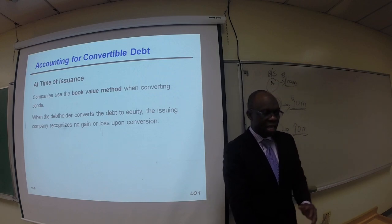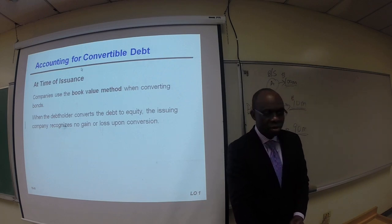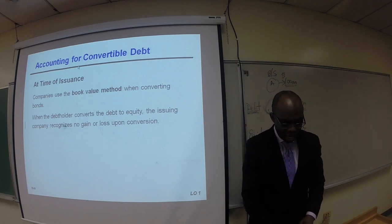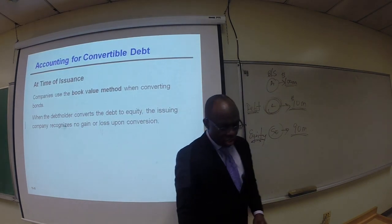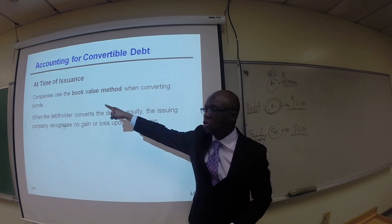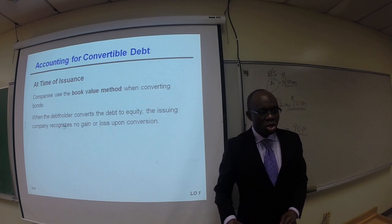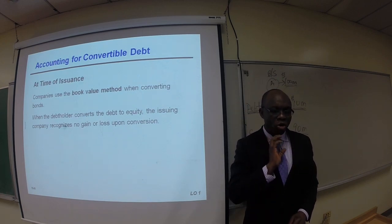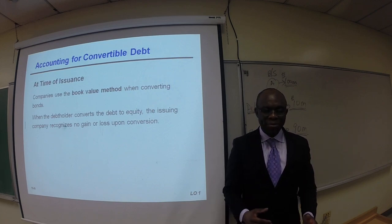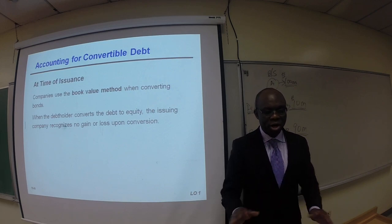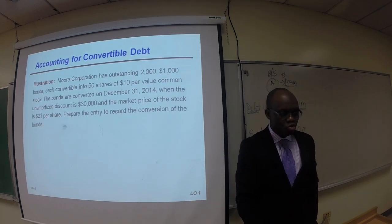Note: there is a typo — this section is actually about time of conversion, not issuance. Companies use the book value method when converting the bond. When the debt holder converts the debt to equity, the issuing company recognizes no gain or loss on bond conversion.